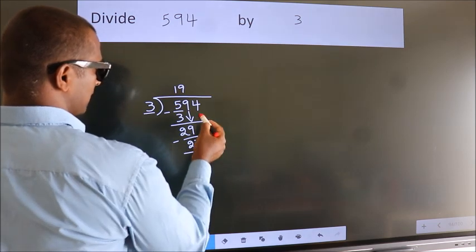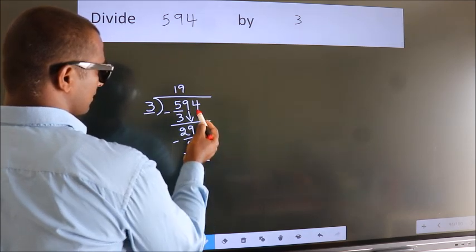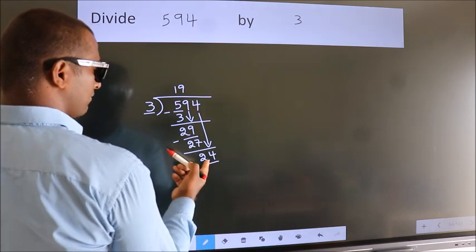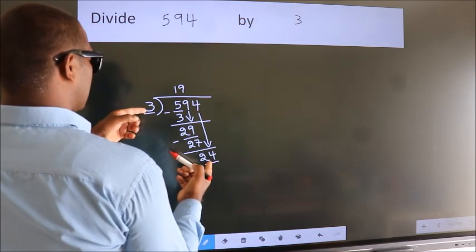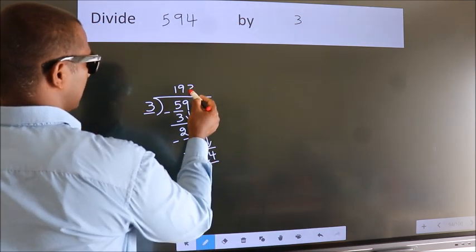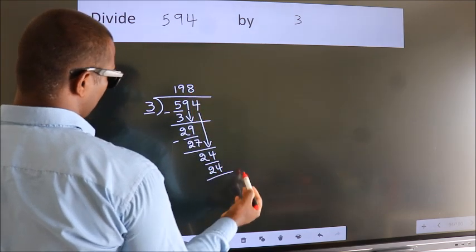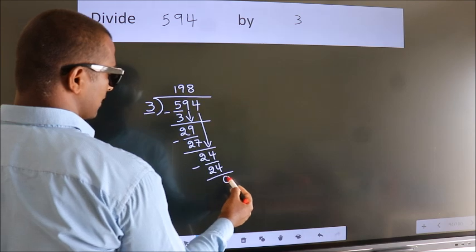After this, bring down the beside number. So 4 down, making 24. When do we get 24 in the 3 table? 3 eights is 24. Now we subtract. We get 0.